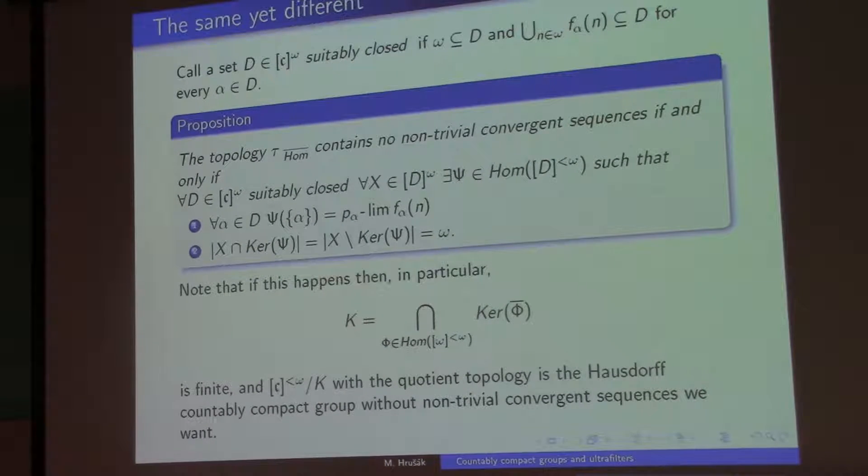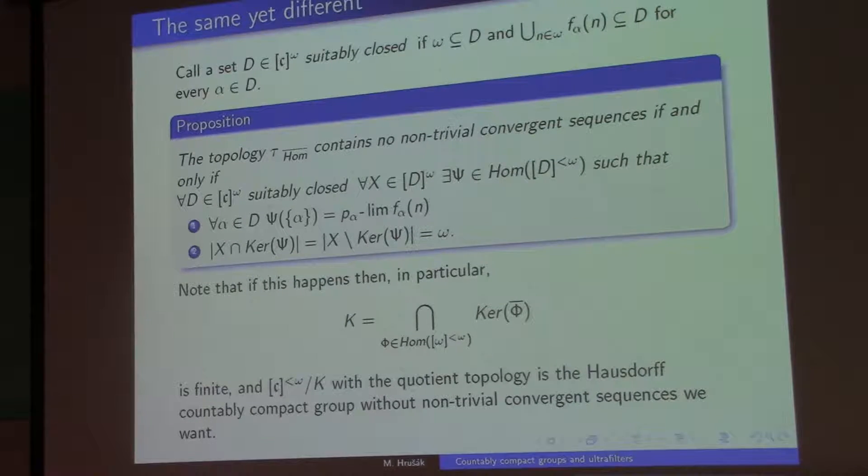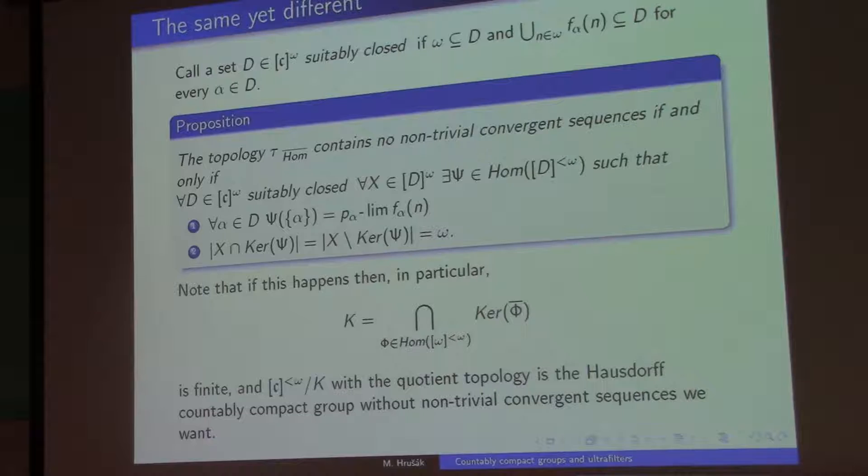The basic neighborhoods of zero are all the kernels, subbasic neighborhoods are all the kernels of these homomorphisms. So this is always a group topology, and it's always countably compact. And now we come to the interesting part.